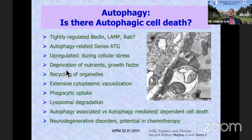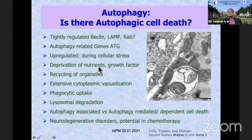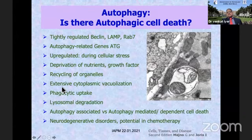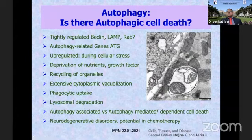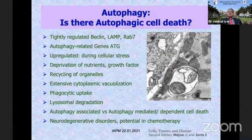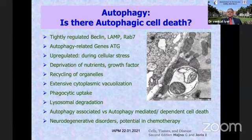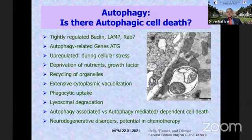What is autophagy? Autophagy is a tightly regulated set of genes called ATG, which include genes like Beclin, LAMP, and RAB7. These are upregulated during any cellular stress like chronic ER stress. Whenever there is deprivation of nutrients or growth factor, the ATG gene balance is changed. The end result is recycling of organelles, extensive cytoplasmic vacuolation, phagocyte uptake, and lysosomal degradation of organelles so that constituents are released for the cell to reutilize. Is there truly autophagic cell death? Probably — this is always activated when there is cell injury, and we have slowly discovered that in plants, and definitely in neurodegenerative disorders, autophagy-mediated cell death is important, especially in stroke. Similarly, there is great potential in chemotherapy — inducing autophagic processes can help us target neoplasia.